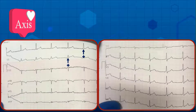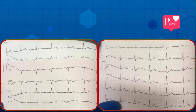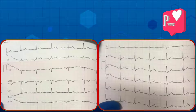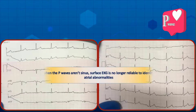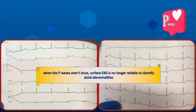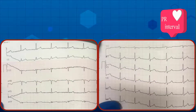Fourth step is axis analysis. The QRS complexes are positive in both leads 1 and 2; therefore the axis is considered normal. Next, regarding the P waves, as we already said, the P waves are originating from the atria not the sinus node. Remember that when the P waves are not sinus, the EKG is no longer reliable to identify atrial abnormalities.